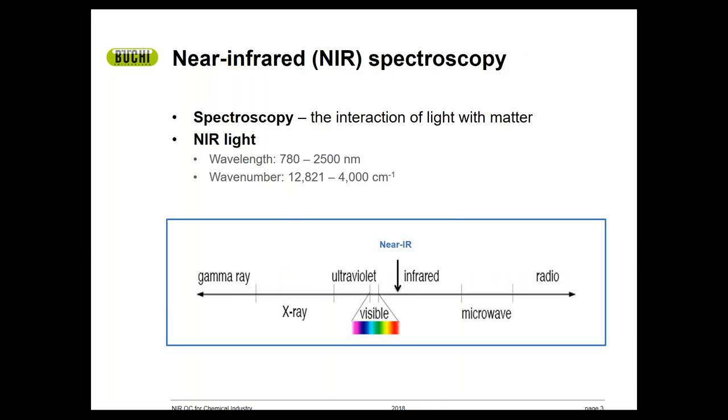Very simply, spectroscopy is simply the study of the interaction of light with matter. The figure here shows the electromagnetic spectrum ranging from high energy, high frequency gamma rays on the left to low energy, low frequency radio waves on the right. You'll see that NIR, or near infrared light, falls just outside the range of the visible spectrum and is characterized by wavelengths of approximately 780 to 2500 nanometers.